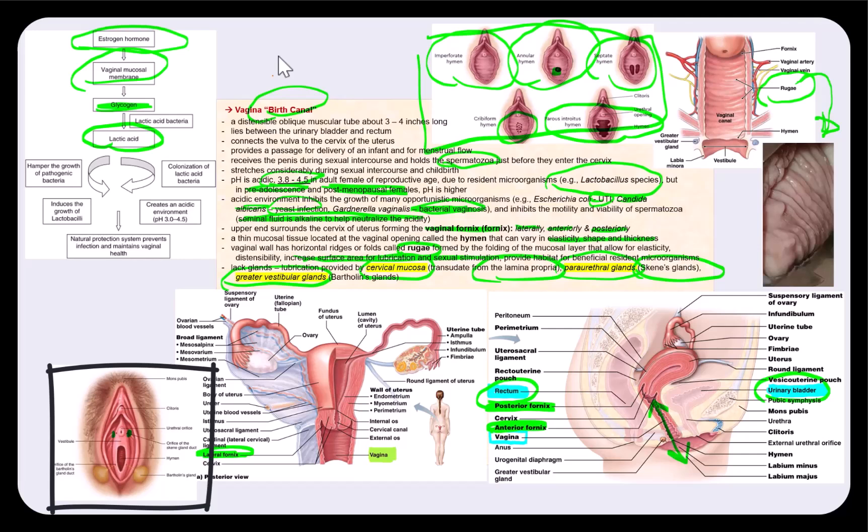Remember, para means next to, urethral means urethra. While the greater vestibular glands, or the Bartholin's glands, they flank the vaginal orifice. These are the tiny little openings that allow for the secretion from these glands to enter the vagina.